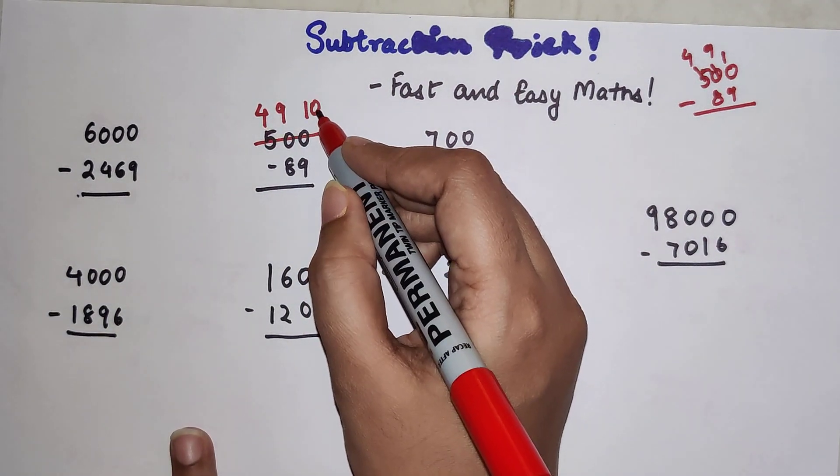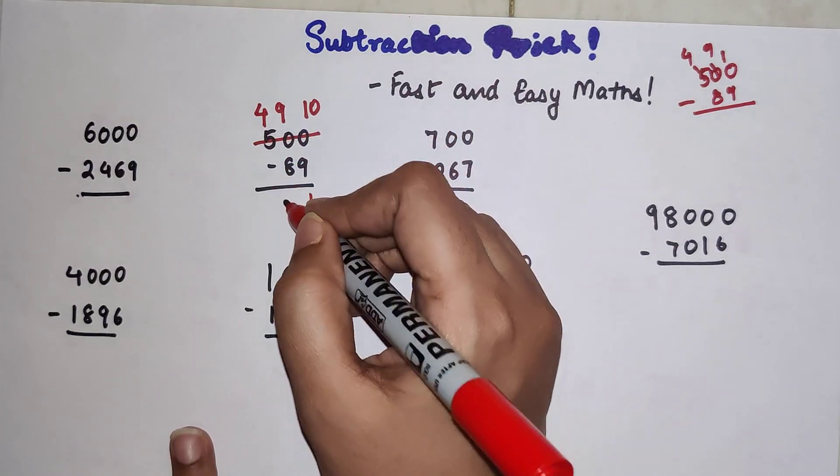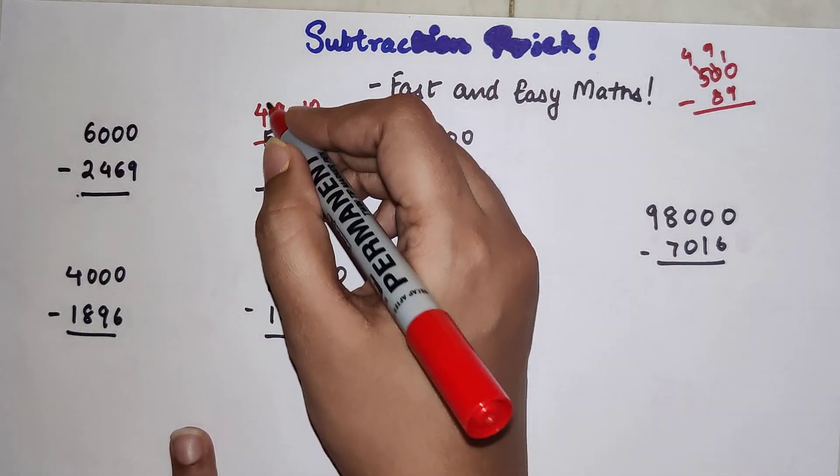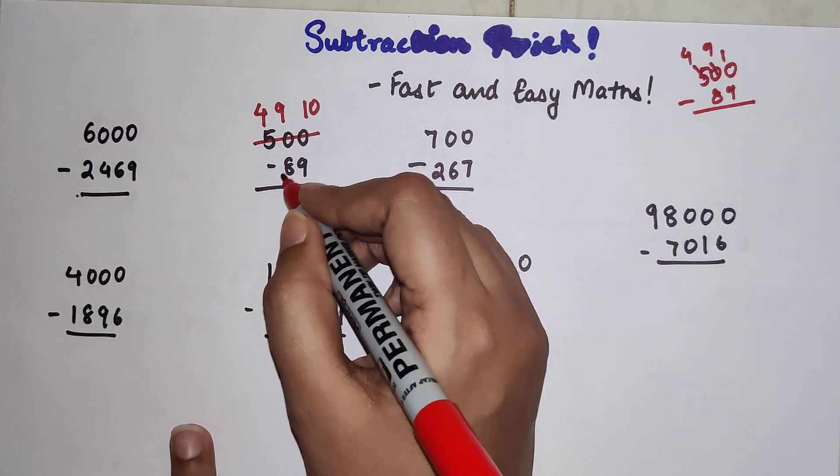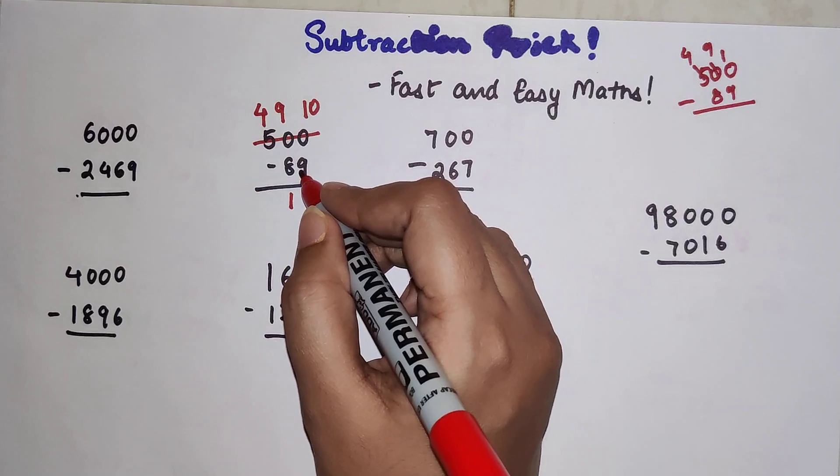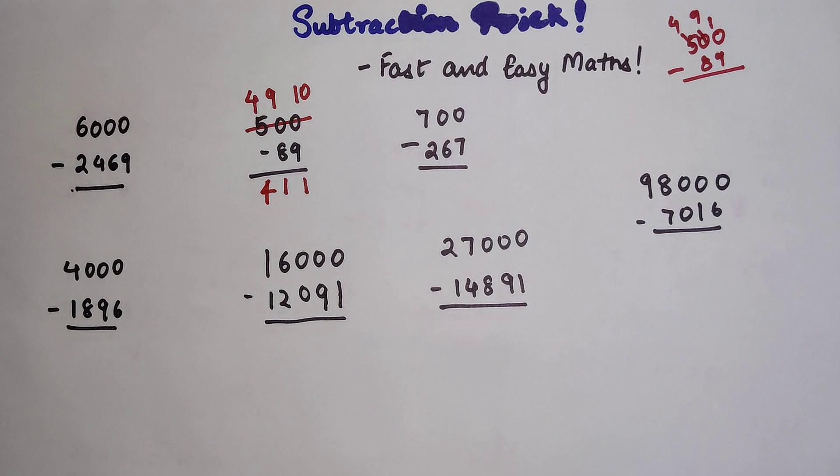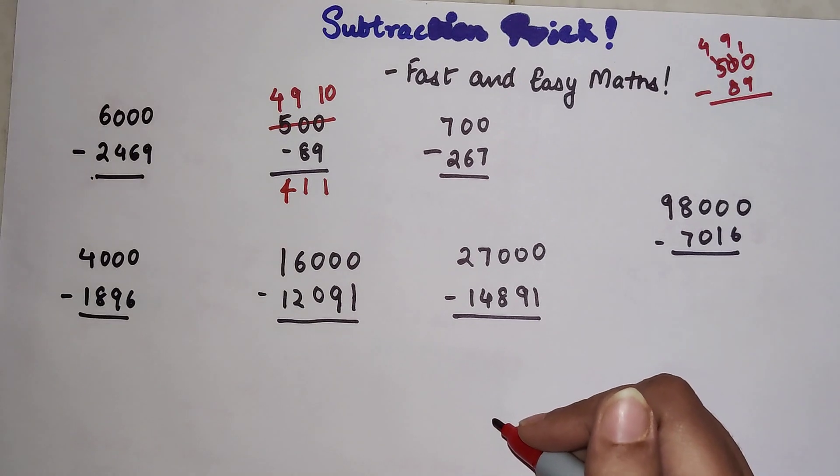So now you have over here, 10 minus 9 gets you 1, 9 minus 8 gets you again 1, and 4 minus nothing - because at the hundredth place of your second number is 0 - so 4 minus 0 will get you 4. So your final answer is 411.